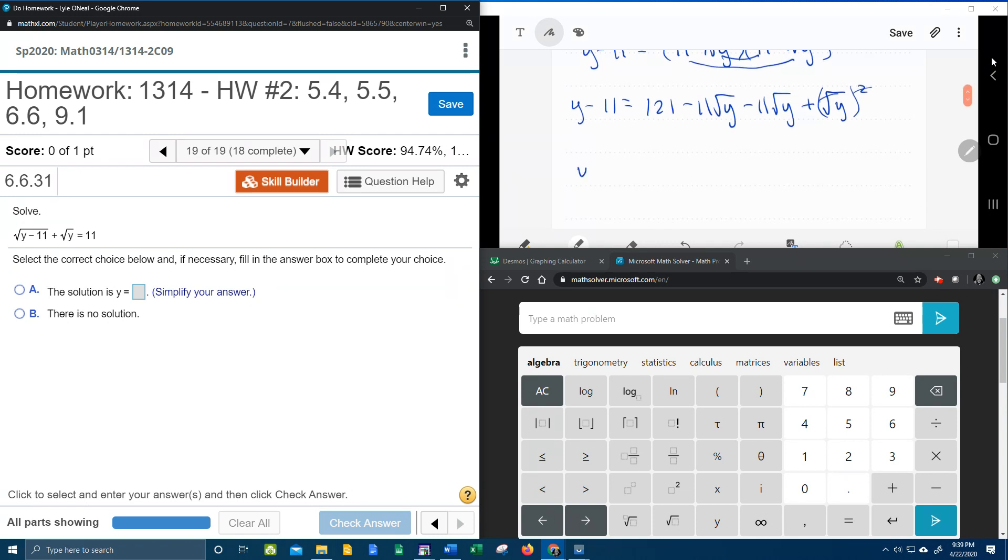Alright, so what do we now have? We have y minus 11 equals, I've got 121, I've got some like terms, negative 11 square root of y, minus 11 square root of y, that's negative 22 square root of y. And remember this last term simplified to just y.